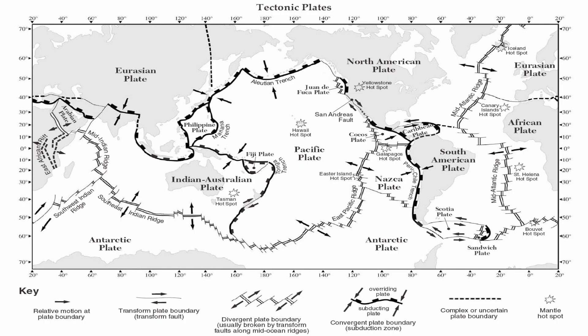You can take a look at your page five tectonic plates chart in your reference table and see that the San Andreas Fault is the most prominent transformed plate boundary, but it's not the only one. You also have some along the South West Indian Ridge, a small one off to the south, a few along the Scotia Plate, and one to the south of the Tasman hotspot.